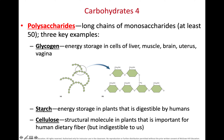Starch is the complex carb of plants — it's the energy storage carbohydrate of plants. We as humans eat starches and use the glucose present in the starch to give us energy. Cellulose is another complex carbohydrate made by plants. Cellulose is the rigid structural material of a plant's cell wall, and it's not digestible by human beings. However, it's important to eat cellulose because it provides fiber that helps move feces through the colon.